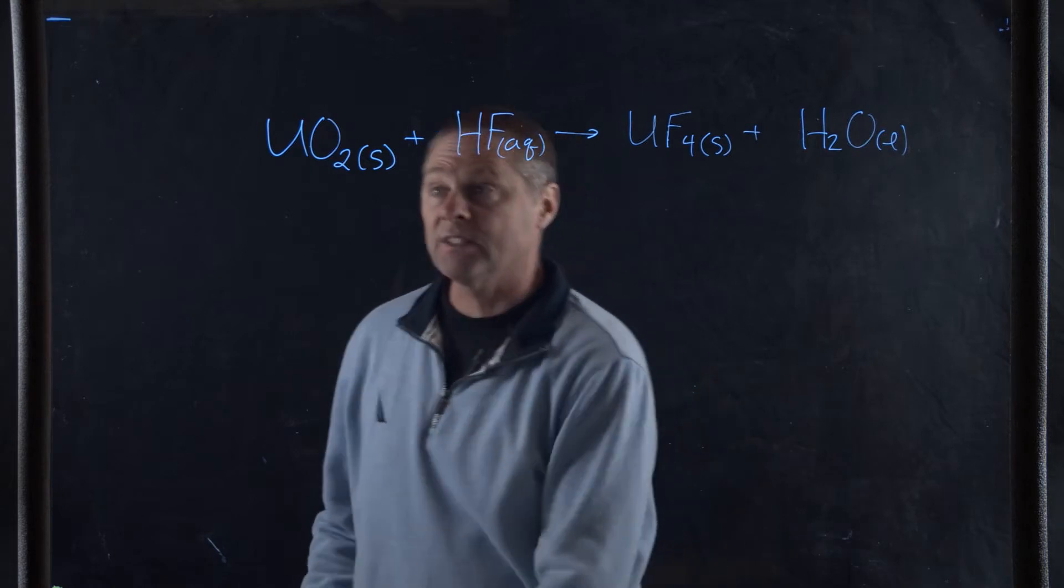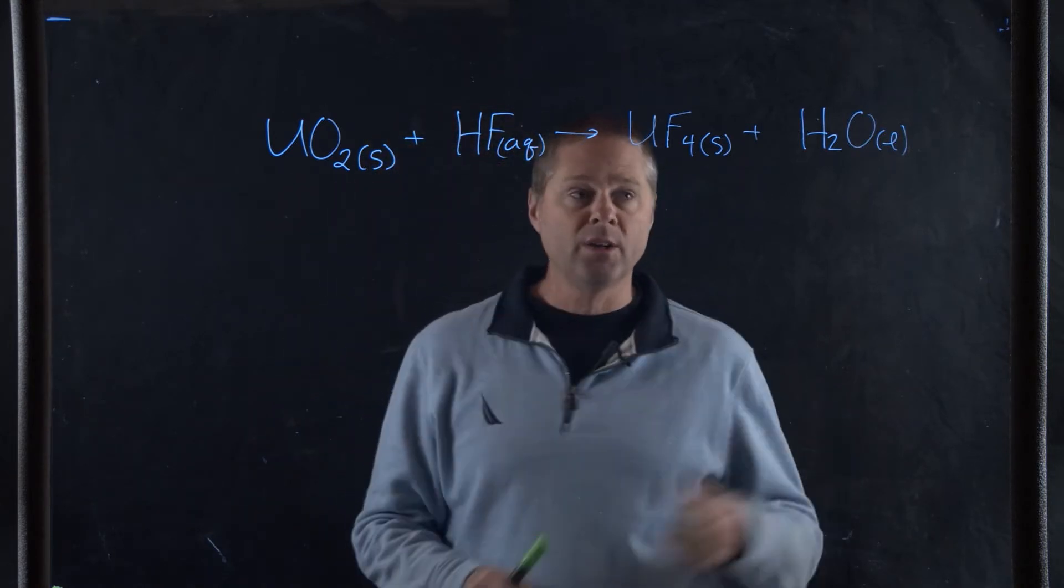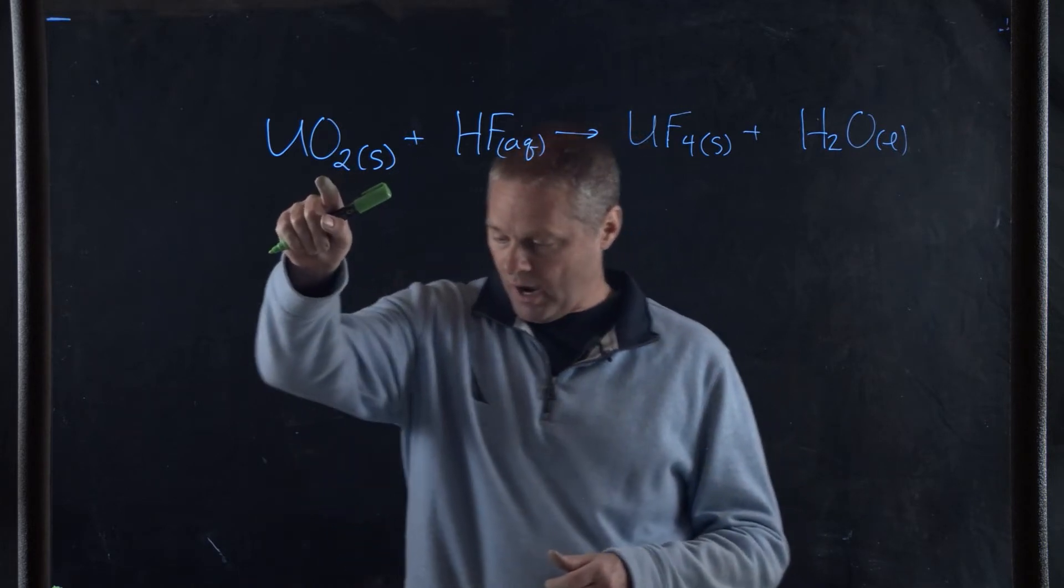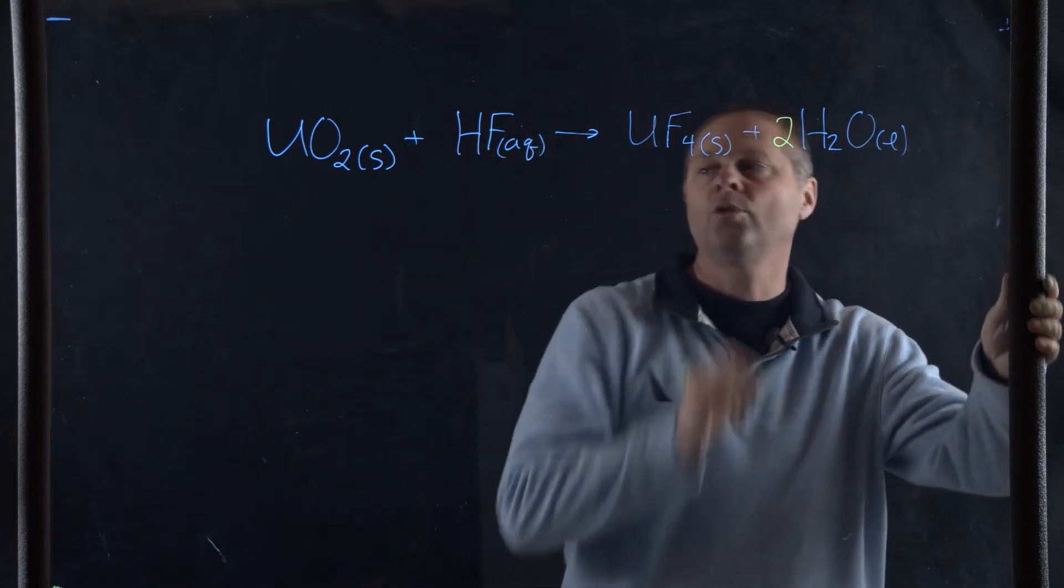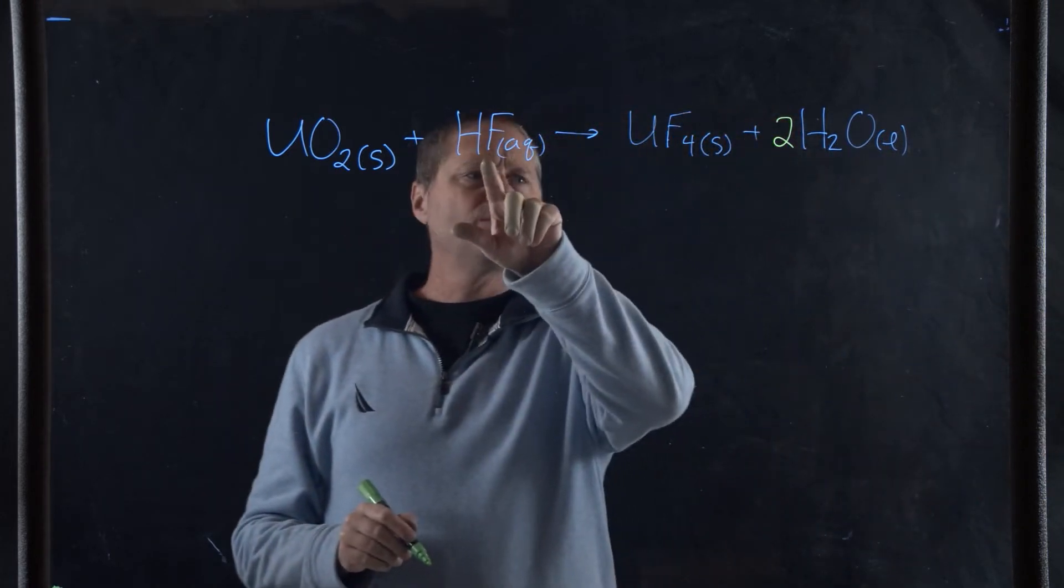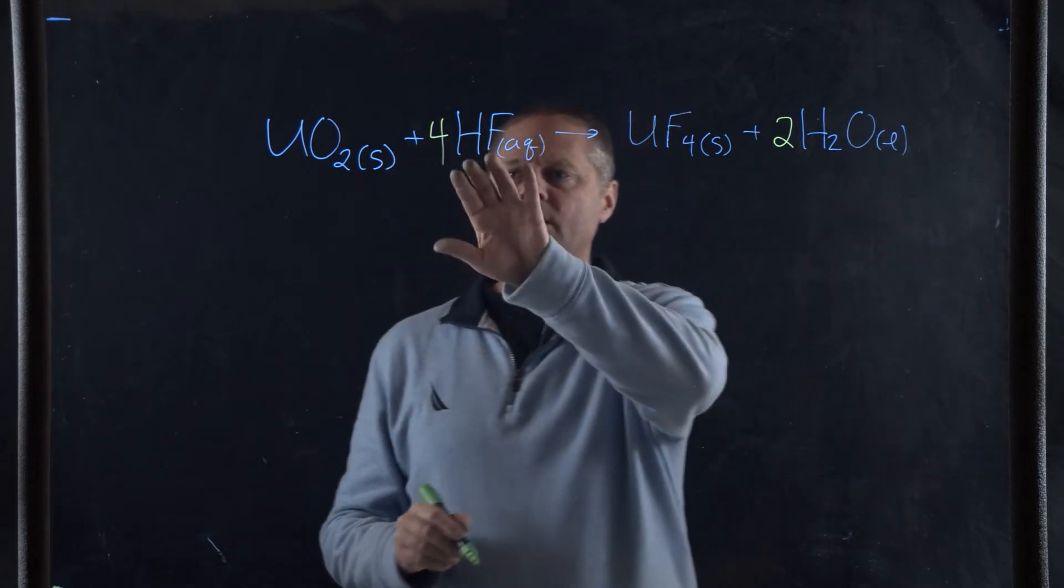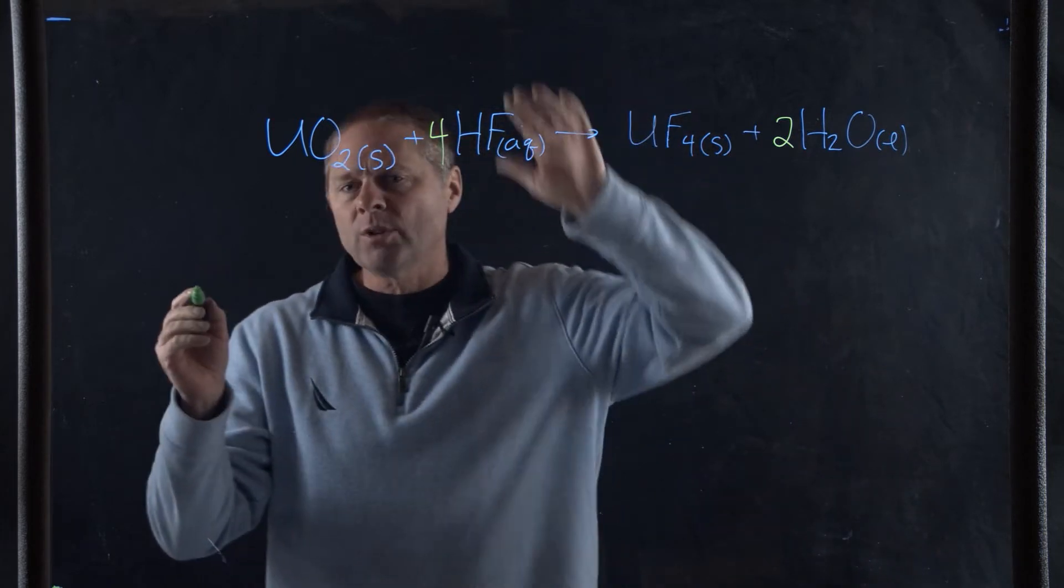First thing we have to do is balance this equation. We have one uranium on each side, looking good. We have two oxygens here, one oxygen there, so we need to put a 2 there. We have one fluoride, four fluorides, so we need a 4 here. That gets us four hydrogens, four hydrogens, so everything is balanced now.